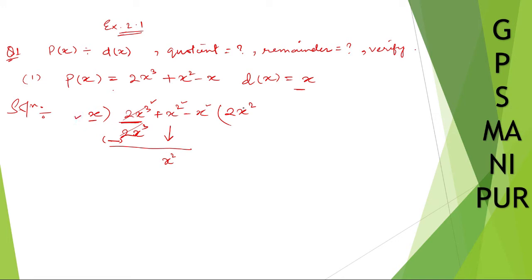Now for x²: what do you multiply x to get x²? Multiply by x, which gives x². Subtract — change the sign of the lower number, so plus becomes minus. x² minus x² equals zero, so it cancels.